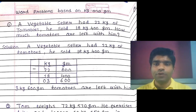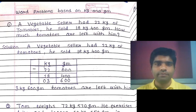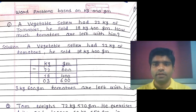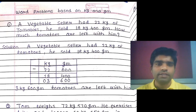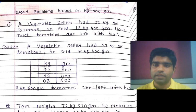Hello dear students, today we will start chapter number 12. The name of chapter 12 is 'How Heavy, How Light.' Today we will discuss a new topic: word problems based on kilogram and gram. In the previous video, we already discussed that 1 kg equals 1000 grams and exactly half of 1 kg equals 500 grams. Now let's start the word problems.